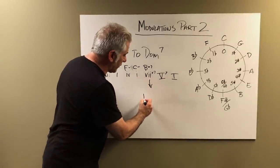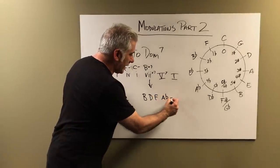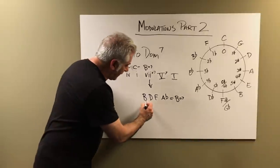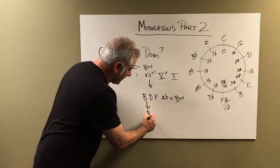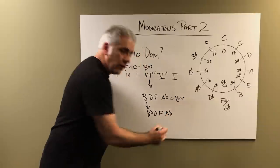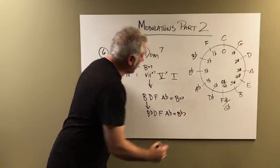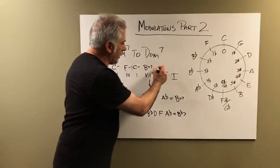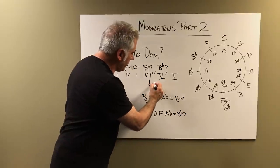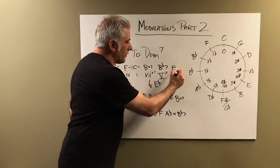Now let's take a look at how this chord is spelled: B, D, F, A flat — that equals B diminished seven. If I lower this note down a half step to B flat, I have B flat, D, F, A flat. We know that is a B flat seven chord, which happens to be the five chord in E flat major. So this is our transition chord and that resolves to the one chord of E flat major.